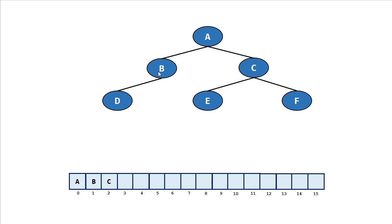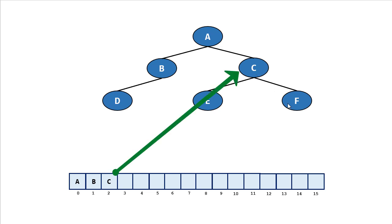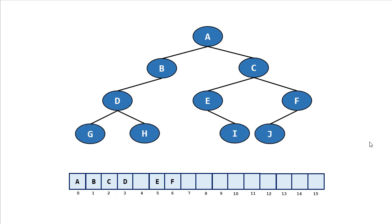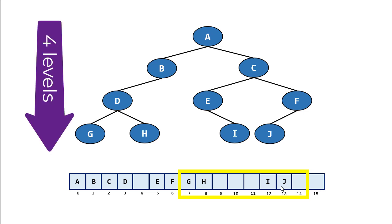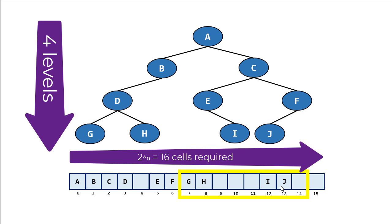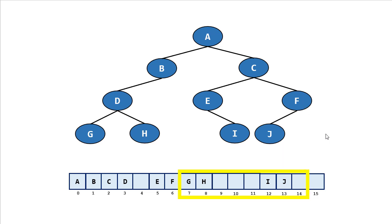Let's do one more walkthrough level by level. The root is at index zero; its children are at indices one and two. The third level is stored between indices three and six — two times one plus one through two times two plus two. Their children are stored between indices seven and fourteen. Given a binary tree with n levels, we need up to 2^n indices in our array to store them, and going down one level doubles the number needed.